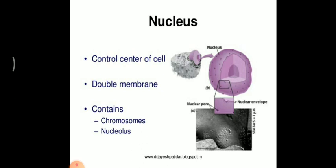Nucleolus is responsible for manufacturing of protein. Inside the nucleus, nucleolus is present for protein synthesis and ribosome synthesis. The nucleus mainly contains RNA. RNA is the genetic material alongside DNA, and RNA formation occurs within the nucleus.